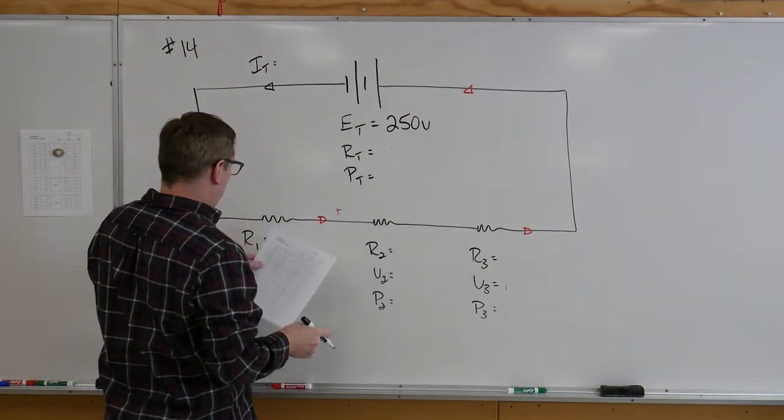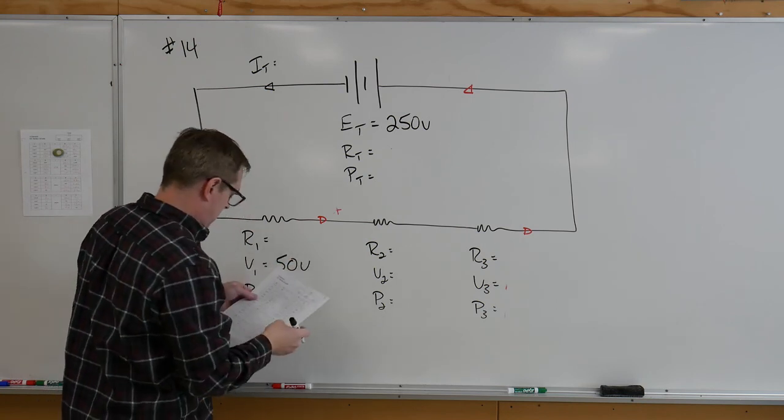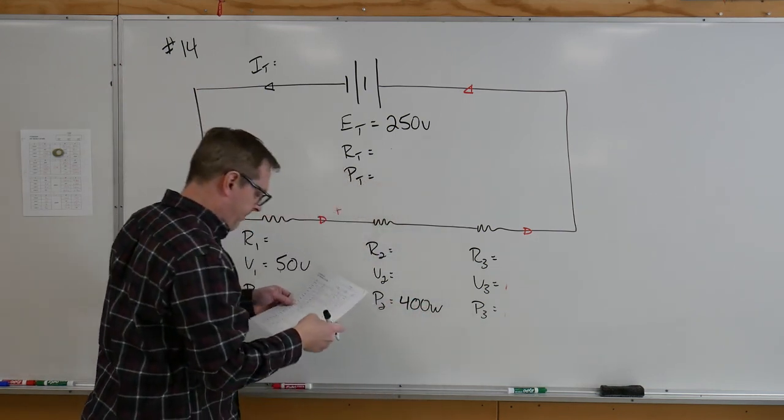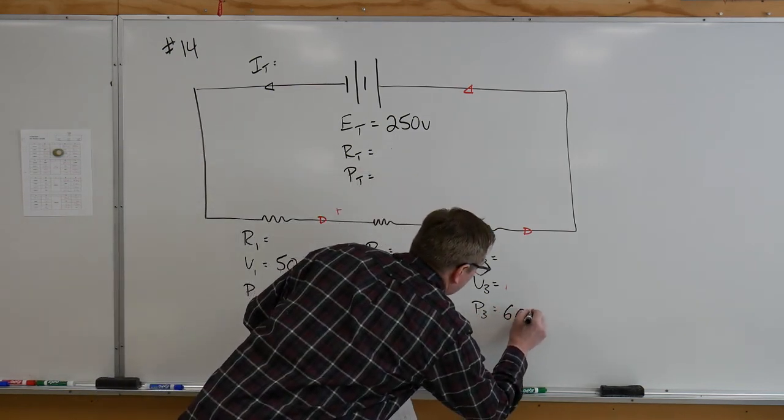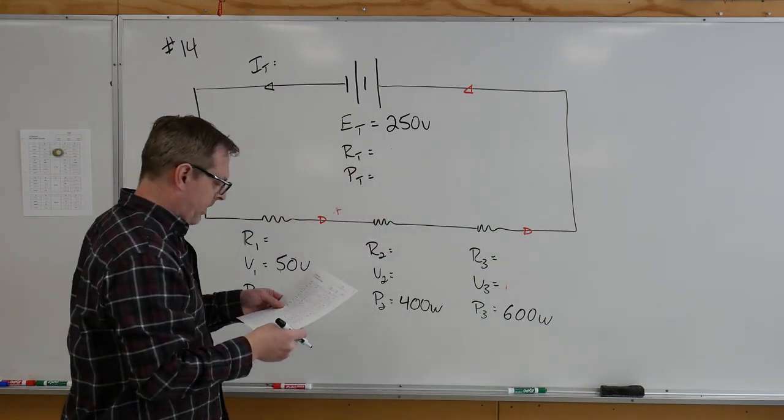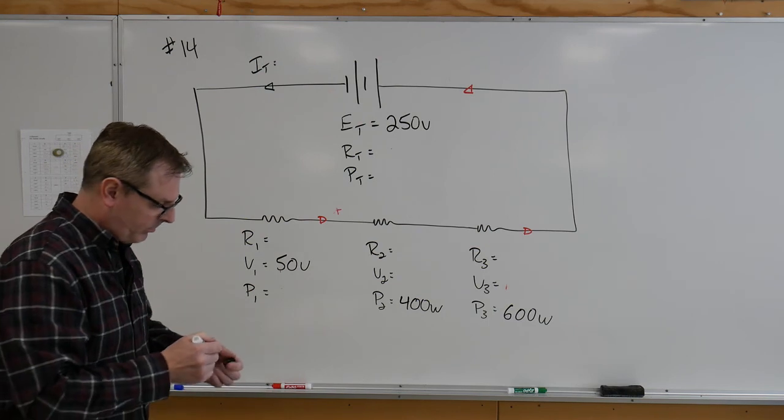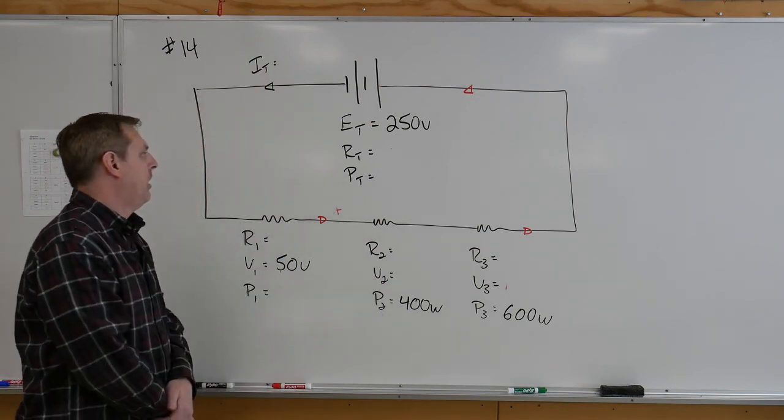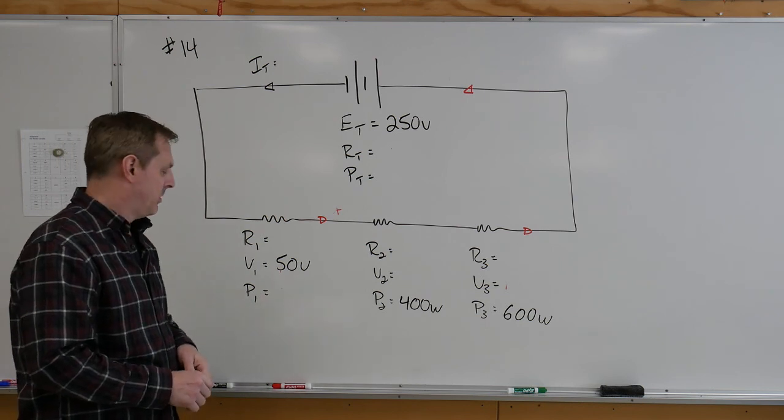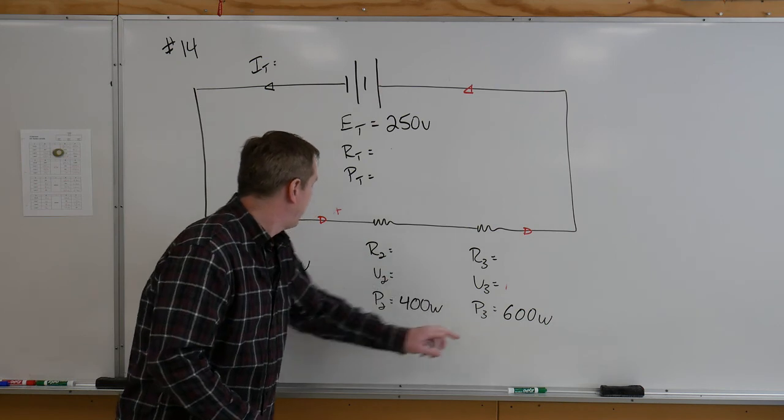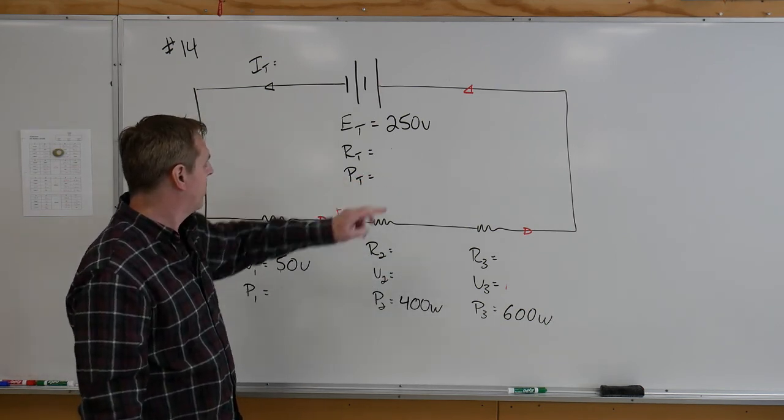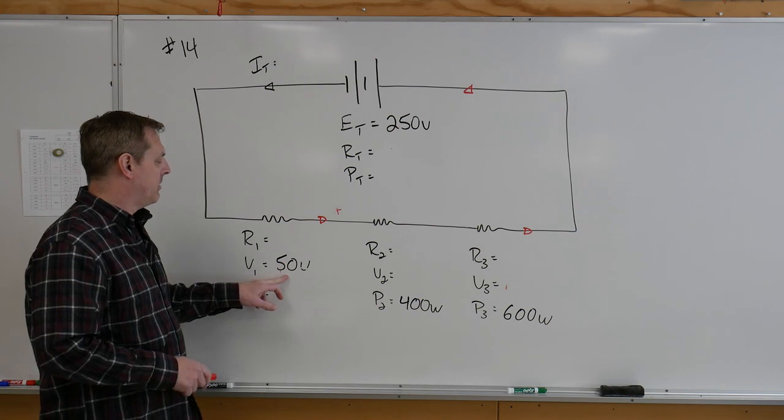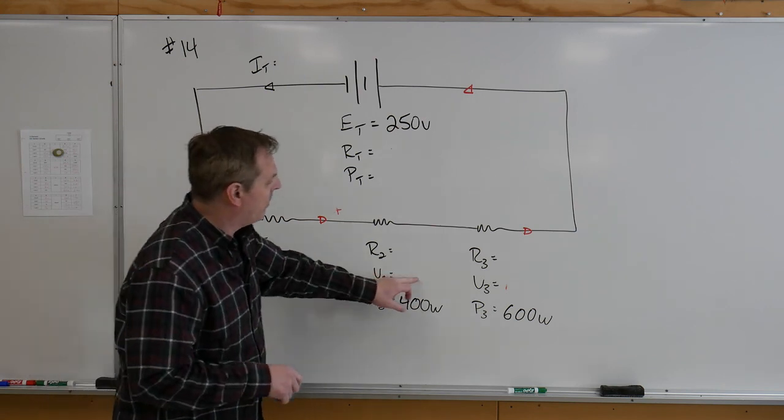They give us a load one of 50 volts, they give us our power two of 400 watts, and a power three of 600 watts. And that's it. That's all they give us. So we need to be able to break this down a little bit in order to solve for our current, which will unlock everything else. We can do that by remembering some general rules. Those general rules would be the sum of all power has to equal the power total, and the sum of all the voltage drops will equal that source voltage. I know we've only given you 50 volts as a voltage drop at V1. How are we going to unlock these two?